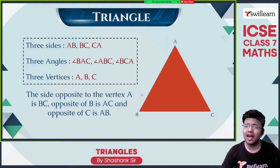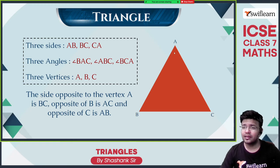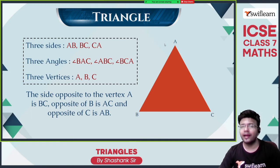A triangle has 3 sides. If A, B, C is a triangle, AB, BC, and AC are the 3 sides.